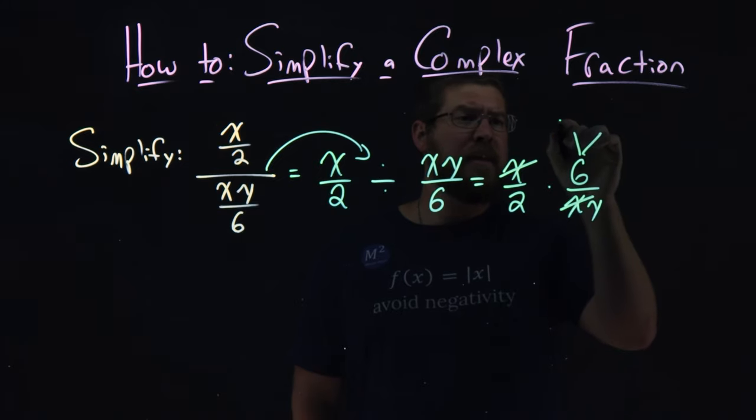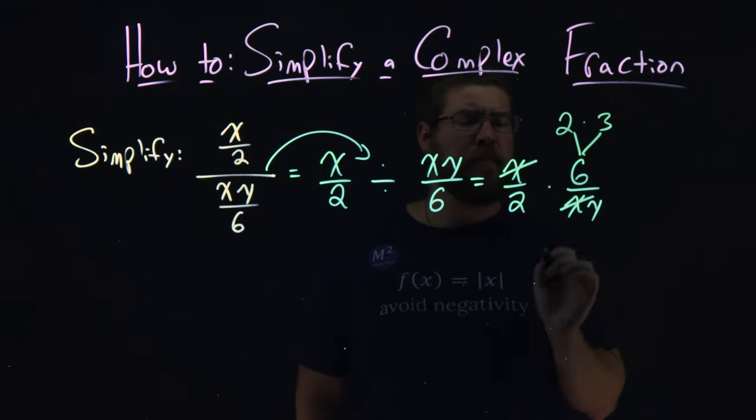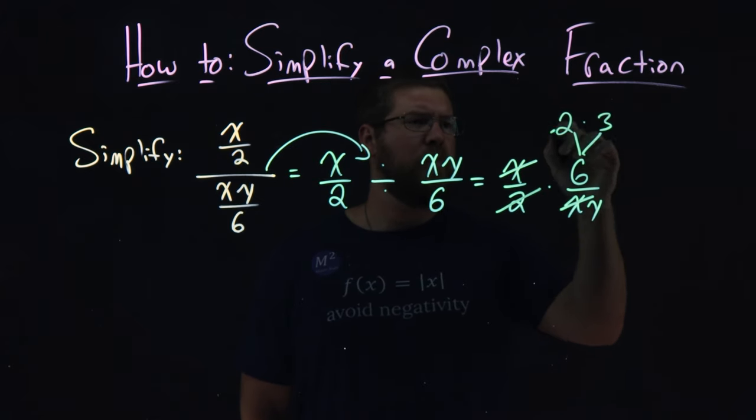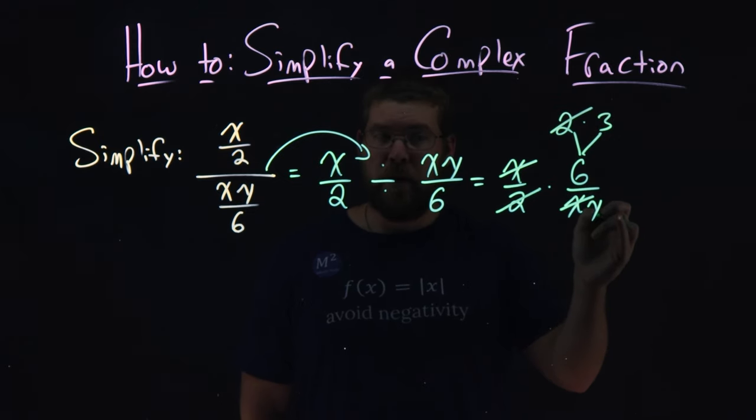6 branches off to be a 2 times a 3. Well, we have a 2 down here in this denominator, right? So we can cancel this 2 with this 2, and we're left with just a 3 in the numerator and a y in the denominator.